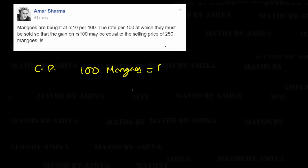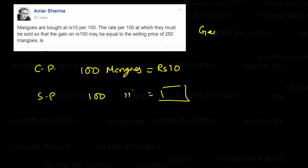We have a question in front of us. Mangoes are bought at Rs.10 per 100, meaning the cost price of 100 mangoes is Rs.10. We need to find the selling price per 100 mangoes such that the gain on a cost price of Rs.100 is equal to the selling price of 250 mangoes.